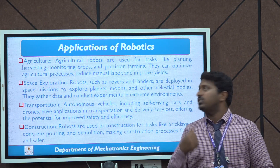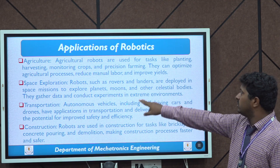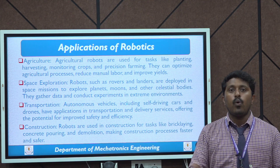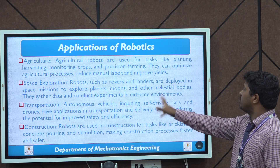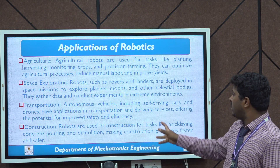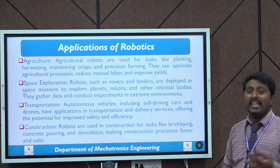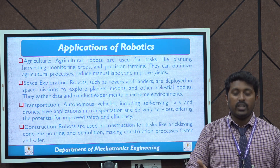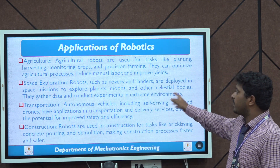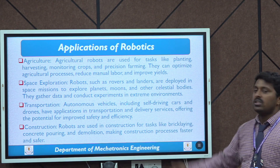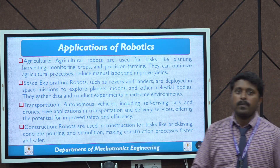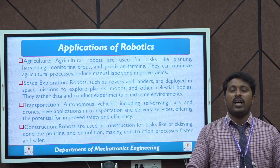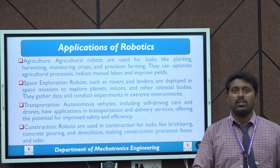In agriculture, robots are used for planting, harvesting, monitoring crops, and precision farming, optimizing processes, reducing manual labor, and improving yield. In space exploration, rovers and landers are deployed to explore planets, moons, and other objects, gathering data and conducting experiments in extreme environments. In transportation, autonomous vehicles, self-driving cars, and drones are replacing human workers. Robots are also used in construction to build buildings, dams, and large structures, improving speed.